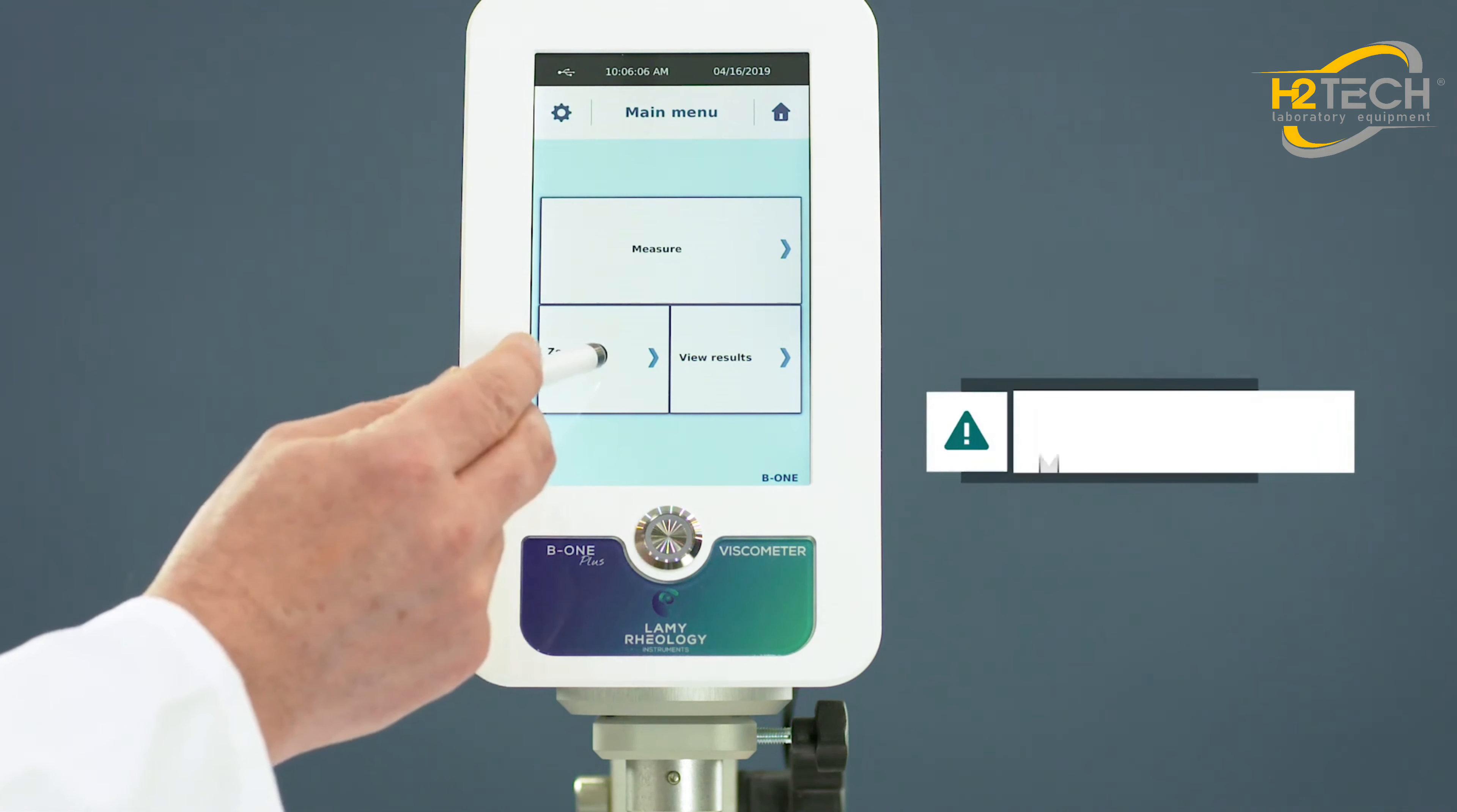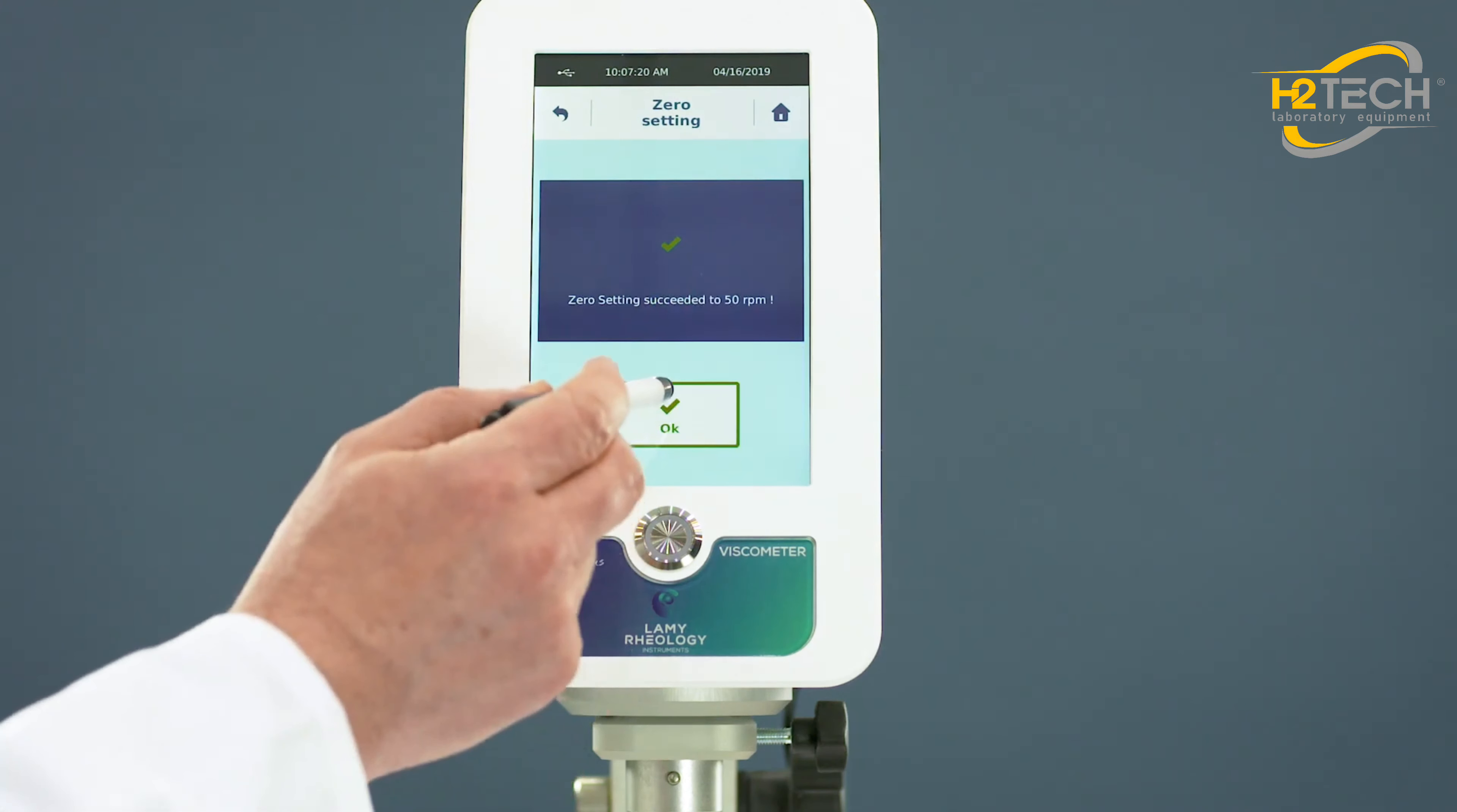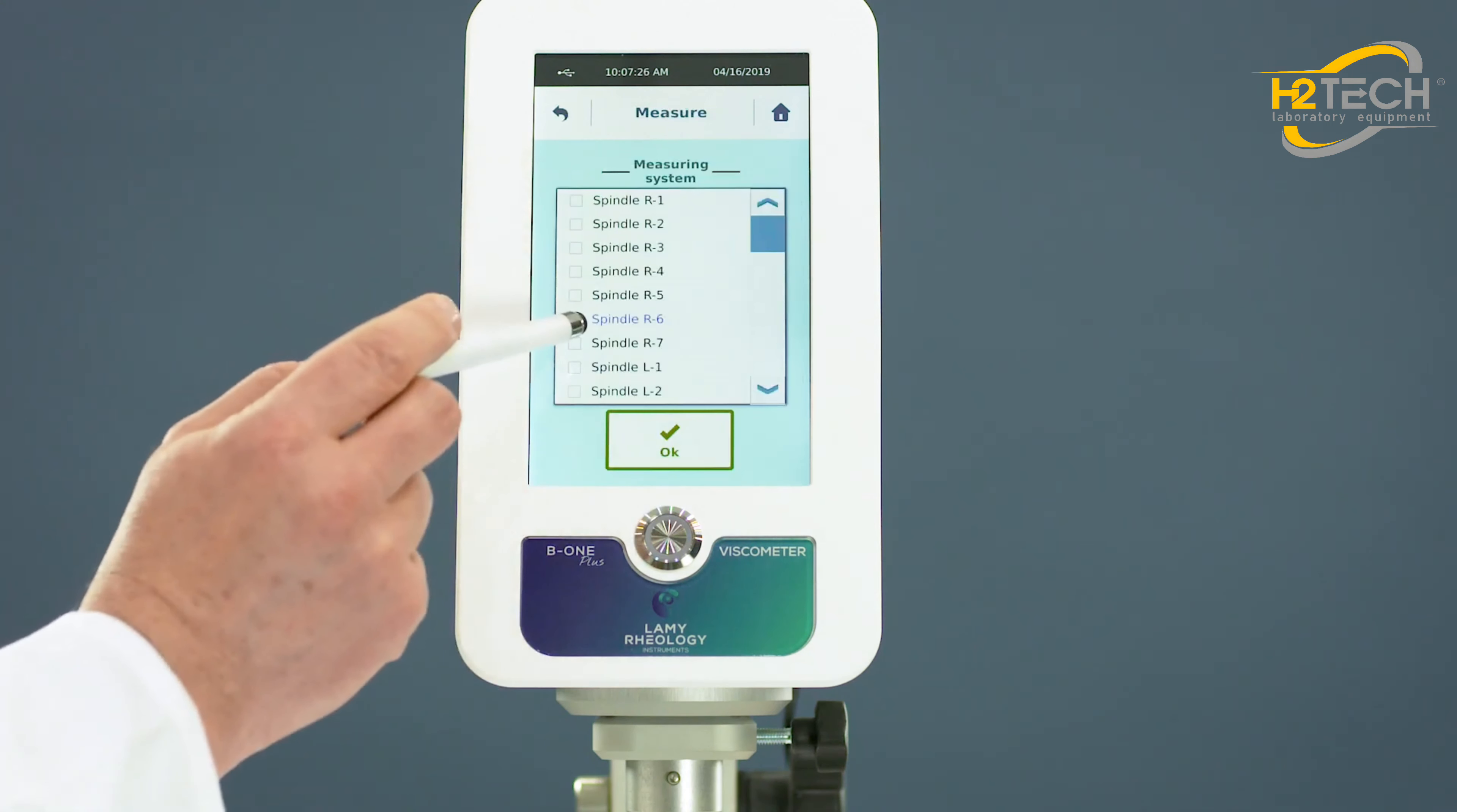Zero the device. You should make it at least once by day. You can now set your measure. Choose the spindle, the speed and the duration.